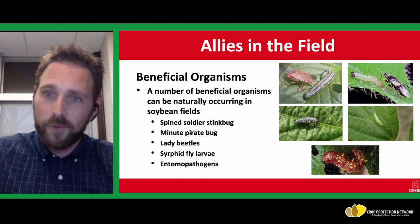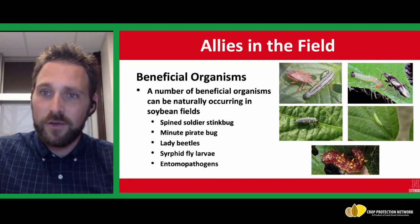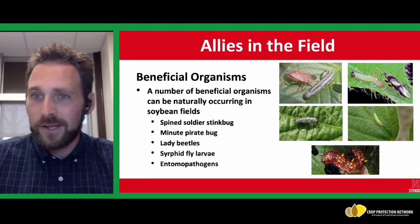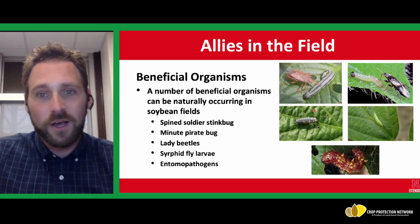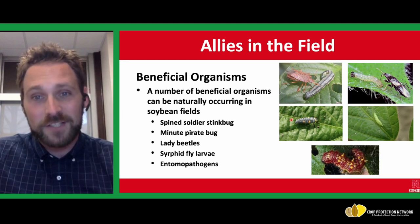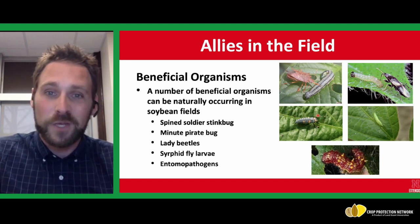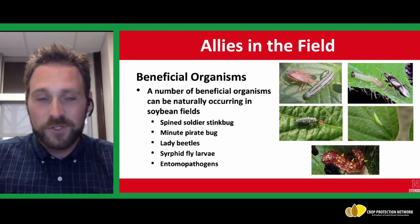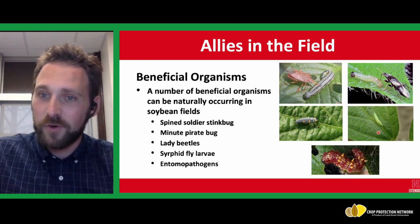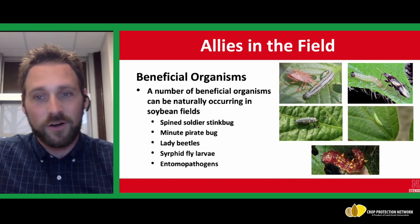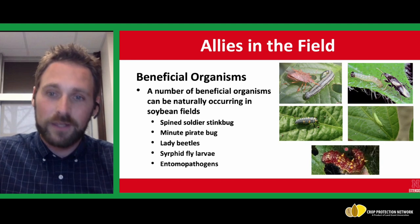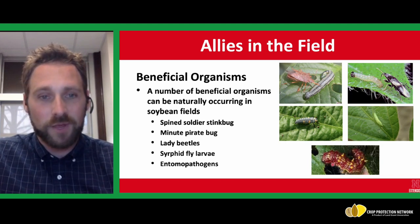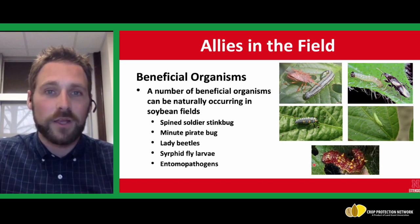We also have our minute pirate bug, which will also bite us on occasion — if you find yourself slapping your shoulder, these are a pretty rigorous predator in the field. Lady beetles — that immature stage kind of looks like little alligators. Syrphid fly larvae are great to have in the field; the adults hover in the field and you may see them on occasion. Entomopathogens are always a welcome sight in the field. Thistle caterpillar can really get knocked down by these, as well as woolly bears and others. This is an important one that you may pick up in your sweep nets that may change how you look at management for a particular insect.